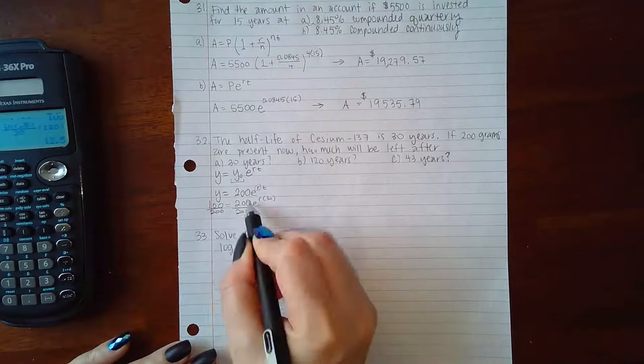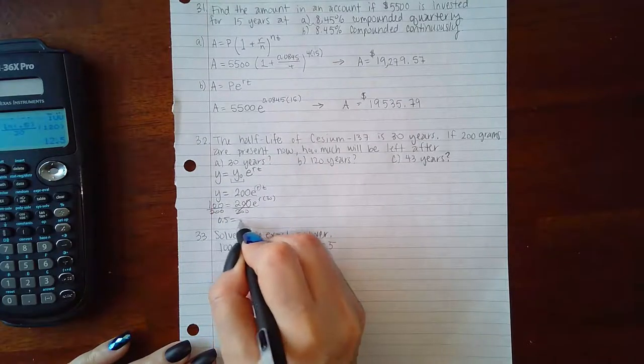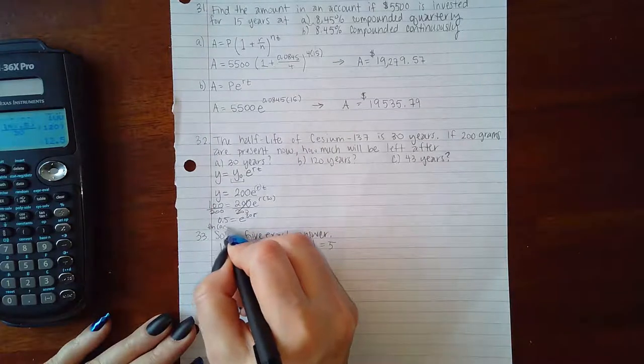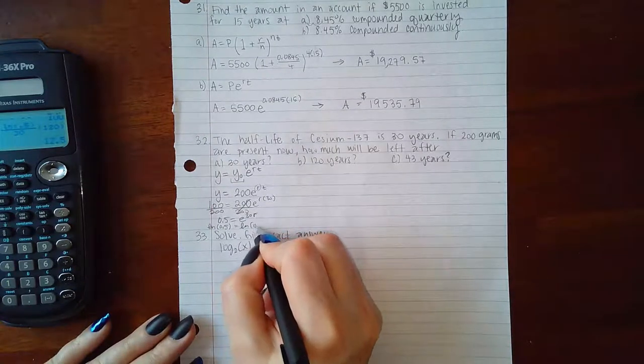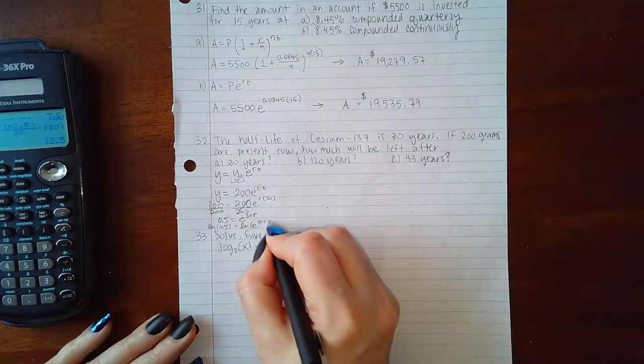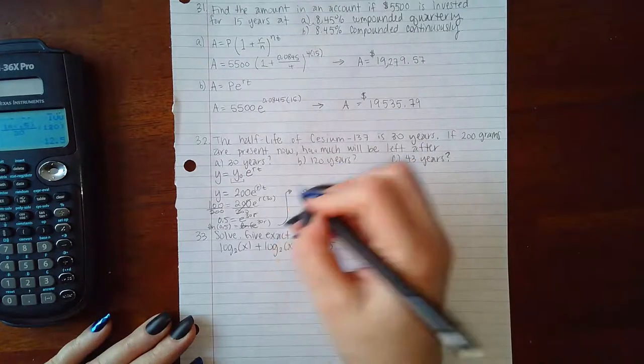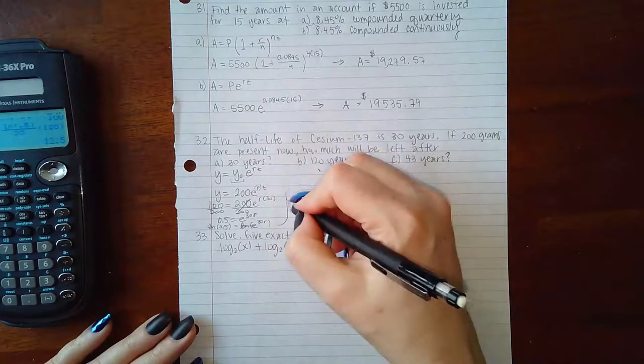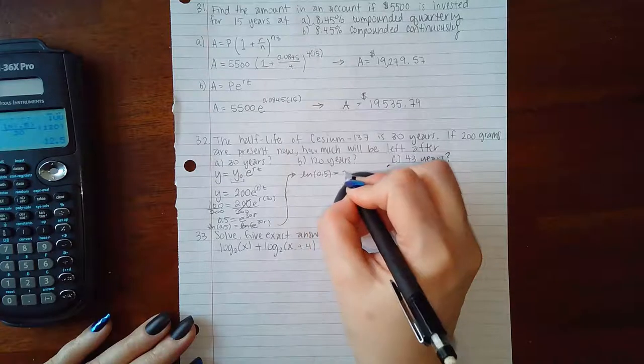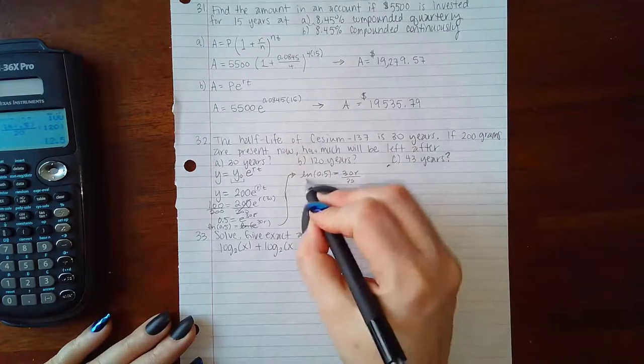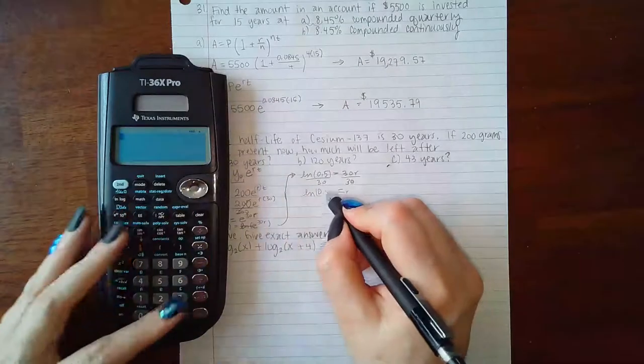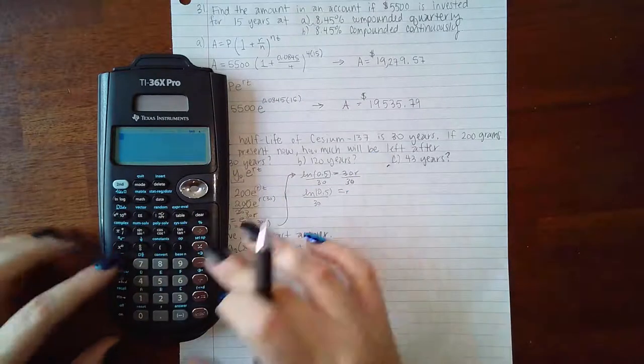If I divide both sides by the coefficient of e, I get 0.5 = e^(30r). To eliminate the exponential e, I would apply the ln on both sides. These would cancel, leaving me with ln(0.5) = 30r. If I divide both sides by that coefficient of r, I get r = ln(0.5) over 30.